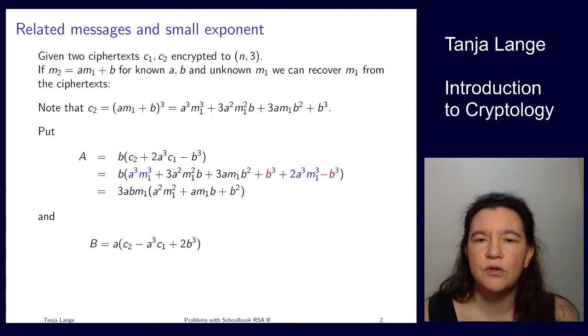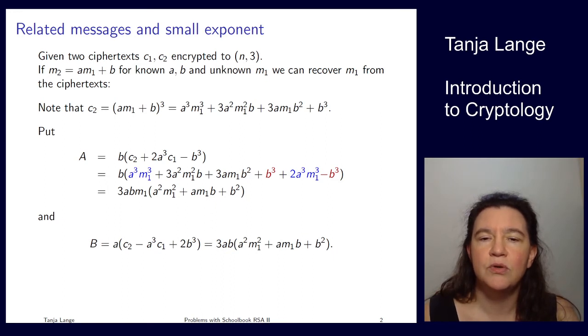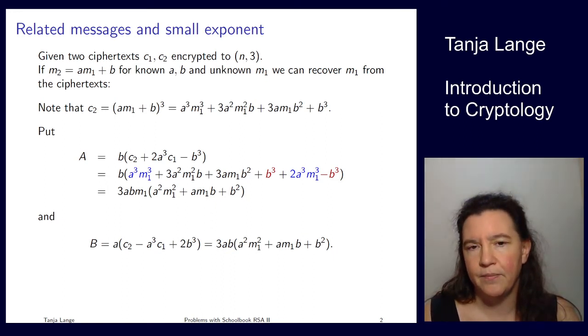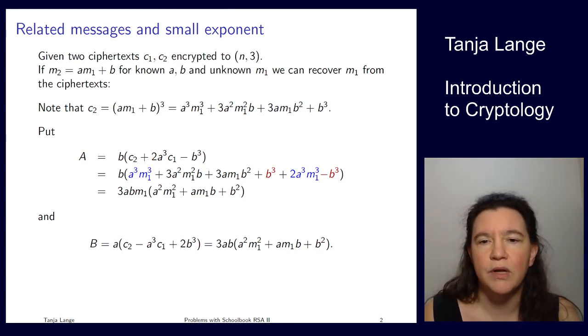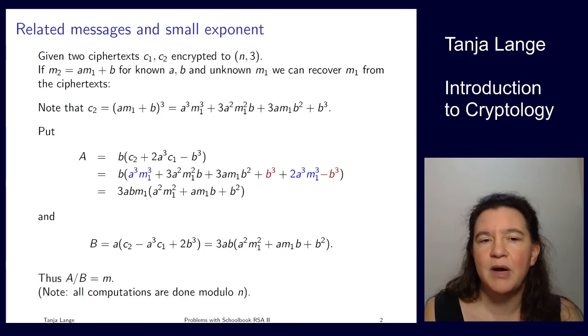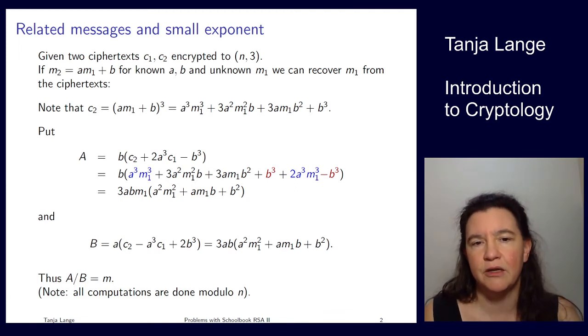So the difference between these terms is that in this one, the terms don't necessarily have an M. And in general, the power of M is just one lower. And so we're getting that A is about the same as B, except A is B times M. So we can take, we compute this A, which is all public information, we've seen the ciphertext, we know A and B. We can compute B. We take the fraction, and we're getting M.